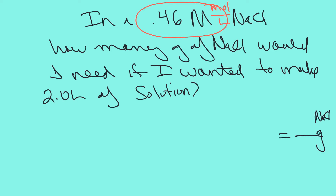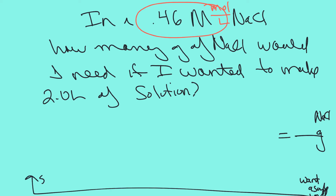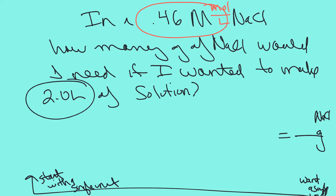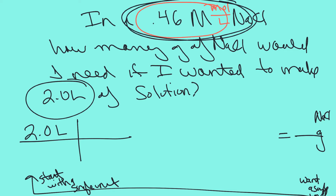I'm trying to find grams of sodium chloride. If I want a single unit, I start with a single unit. My single unit is 2.0 liters. Now I look around in my problem for another liter — I see 0.46 moles per liter. I want liters on the bottom so I don't have to flip it: 0.46 moles per liter. This is my molarity. My liters cancel and now I'm at moles.